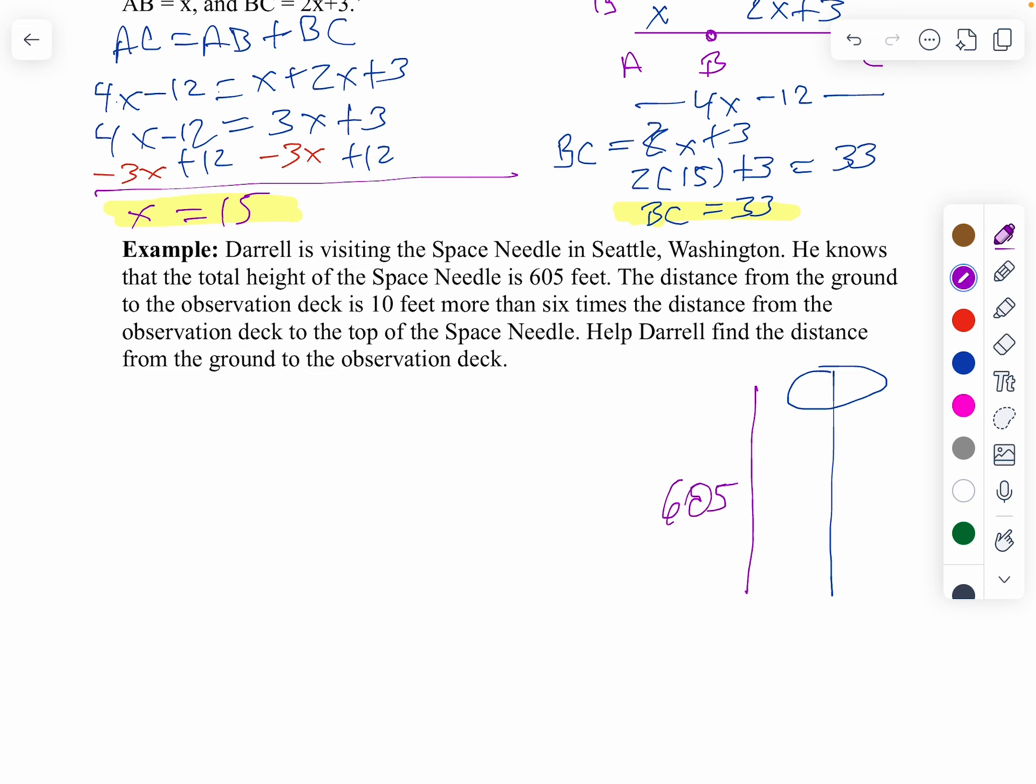And, then, it says the distance from the ground to the observation deck is 10 feet more than 6 times the distance from the observation deck to the top of the needle. In other words, I don't know this distance to the top, but I know the distance below it is defined by that. So, my unknown, I'm going to call x because I don't know what it is. And, then, it says it's 10 feet more than 6 times. So, the bottom part would be 6x plus 10. Well, then, I can apply my segment addition. I know 6x plus 10 plus x equals 605. So, I think I'm going to just write that down. x plus 6x plus 10 equals 605.